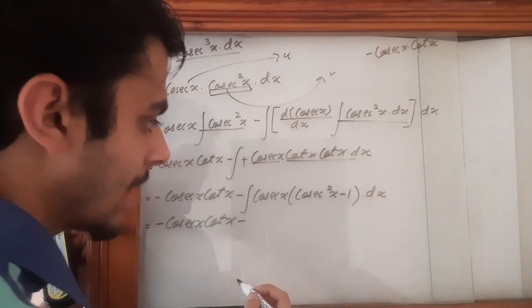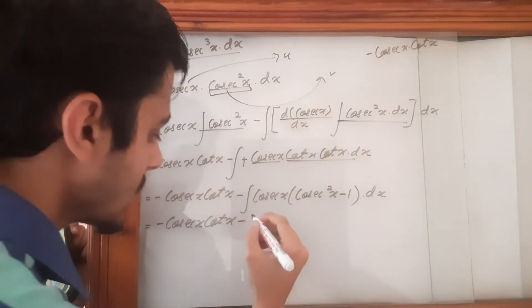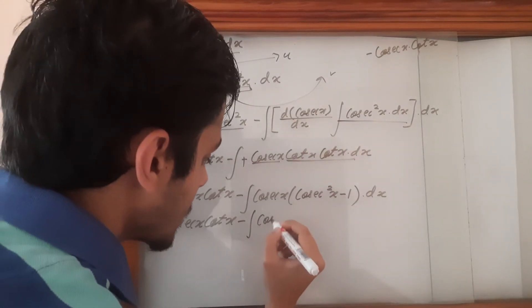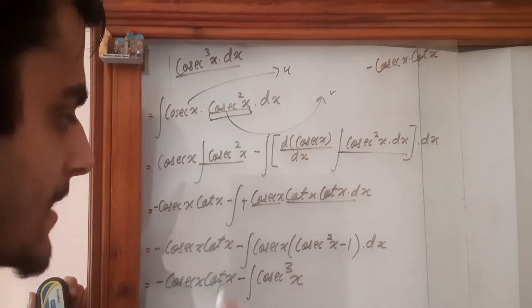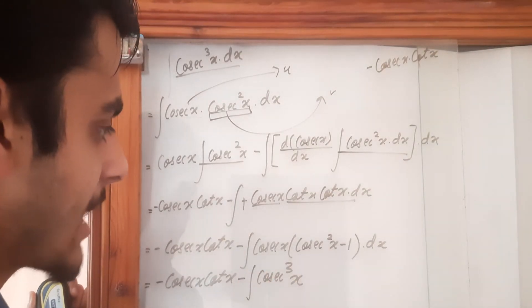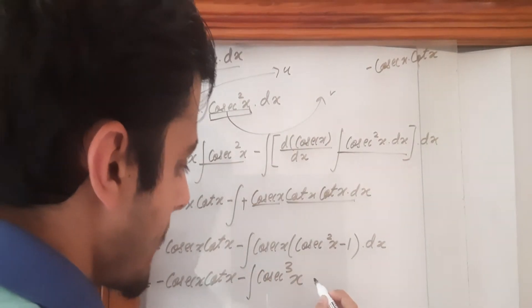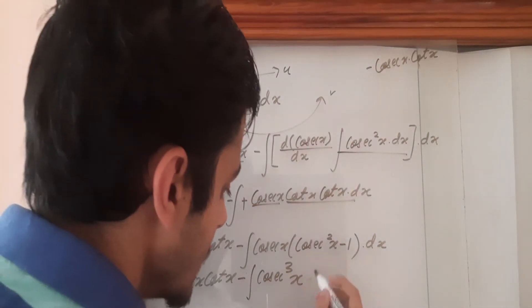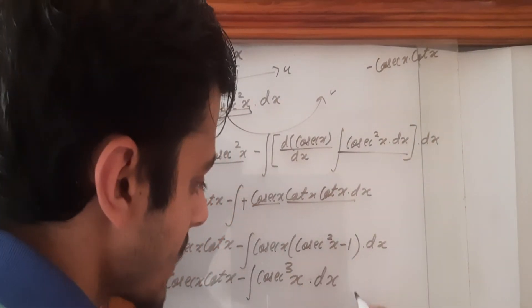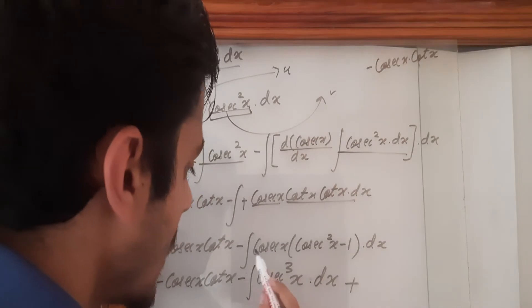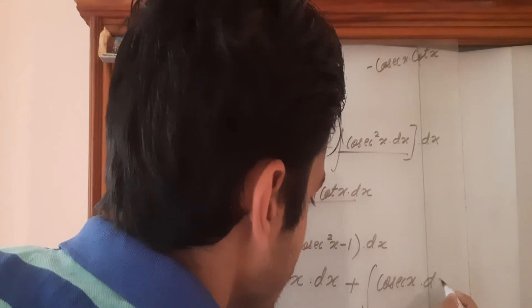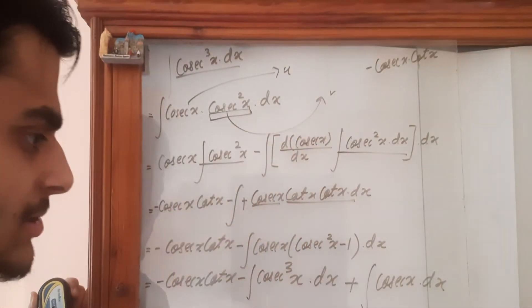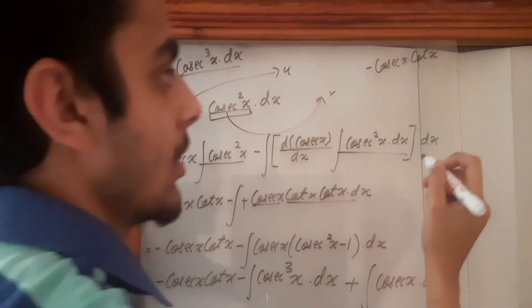So it would be cosec cube x. And then this minus multiplies this minus. So we get plus cosec x dx. So I think you won't be able to see if I write here. So let's move over there.